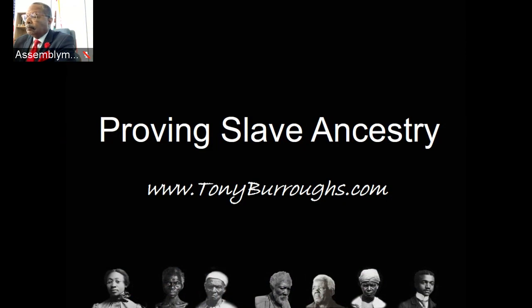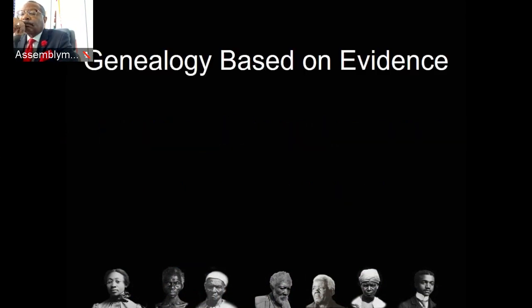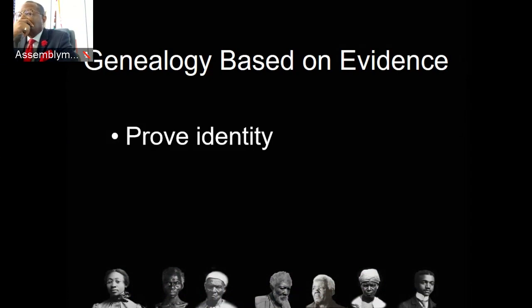I don't have a lot of time, but I want to give you the 40,000-foot view of proving slave ancestry. Genealogy is based on evidence — it's very similar to a court of law where a person dies without an estate and people have to bring in evidence to prove who's related to the deceased and how. We're trying to prove two things: the first is identity.